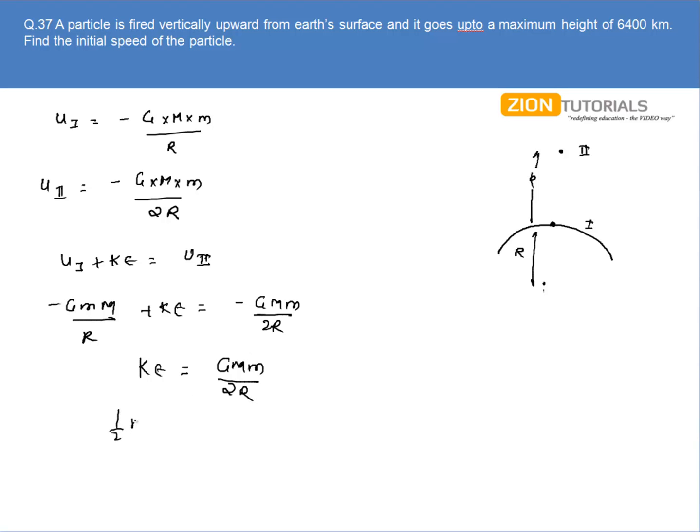Half of m v squared equals GMm by 2R. This m is cancelled, 2 is cancelled. The velocity comes out to be the square root of GM by R.